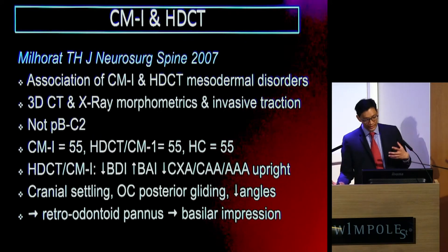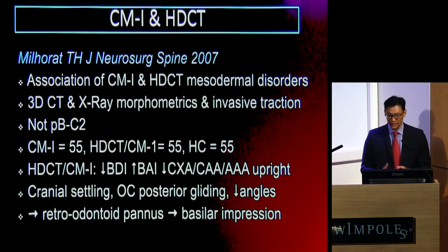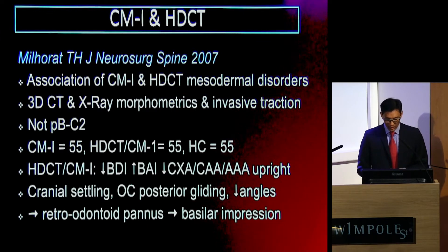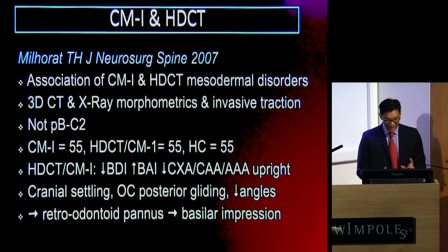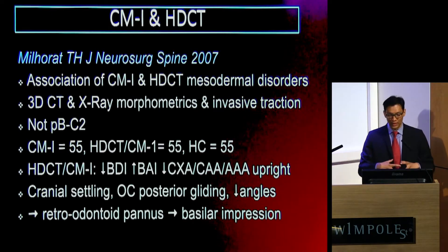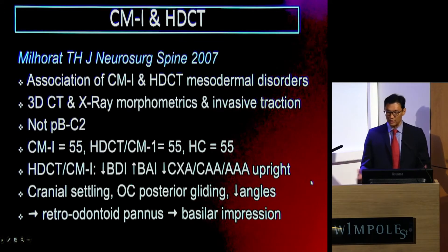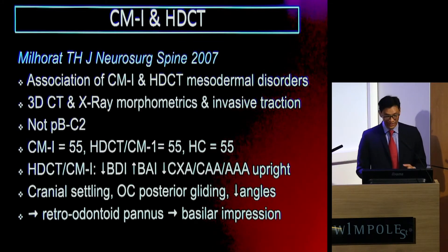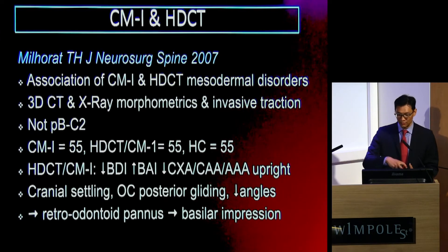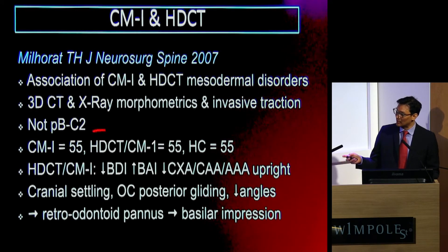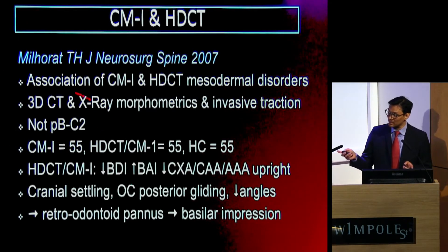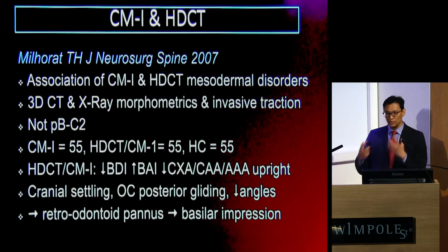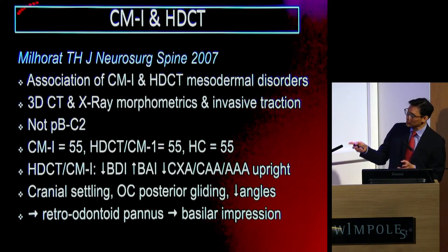How does this relate to hypermobility syndromes, EDS, and hereditary disorders of connective tissues? The so-called seminal paper was published in 2007, drawing an association between Chiari-1 malformation and connective tissue disorders, grouped together as an all-encompassing mesodermal disorder. They looked at 3D CT and X-ray morphometrics and utilized invasive traction methods in three subgroups: ones with Chiari-1 malformations, connective tissue disorders with Chiari-1 malformations, and healthy controls. Notably, there was no utilization of the Grabb-Oaks measurement in that particular paper, but it was quite important in drawing that association.